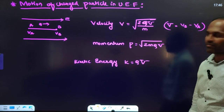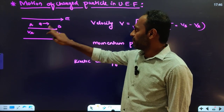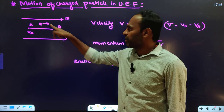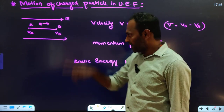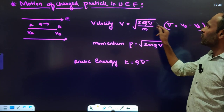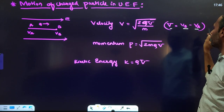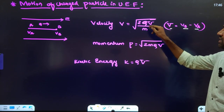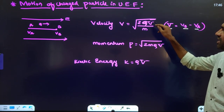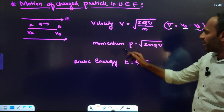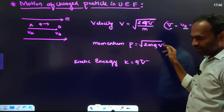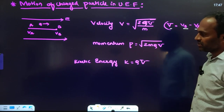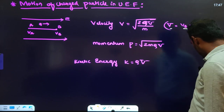Motion of a charged particle in a uniform electric field: if a charge Q is moved from point A to point B with potential difference V, then velocity = √(2QV/M), where V is potential difference and M is mass. Momentum P = √(2MQV). Kinetic energy = QV. In all these formulas, V is the potential difference between the initial and final points.